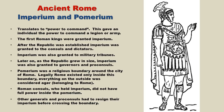I thought I would take some time to explain two very important aspects of ancient Rome: Imperium and Pomerium. They kind of go hand in hand, which is why I have included both topics in this lecture. Imperium translates literally to the power to command, and this basically gave an individual the power to command a legion or army. The first Roman kings were granted Imperium. After the Republic was established, Imperium was granted to the consuls and, if need be, a dictator. It was also granted to military tribunes.